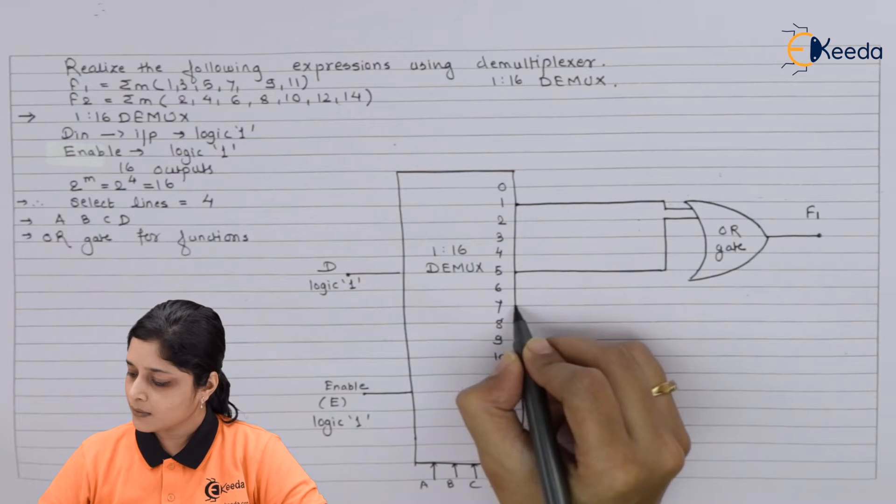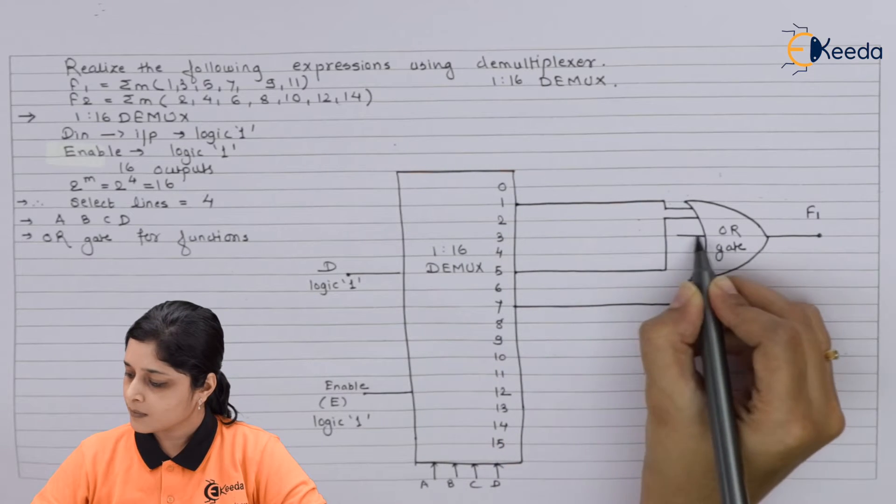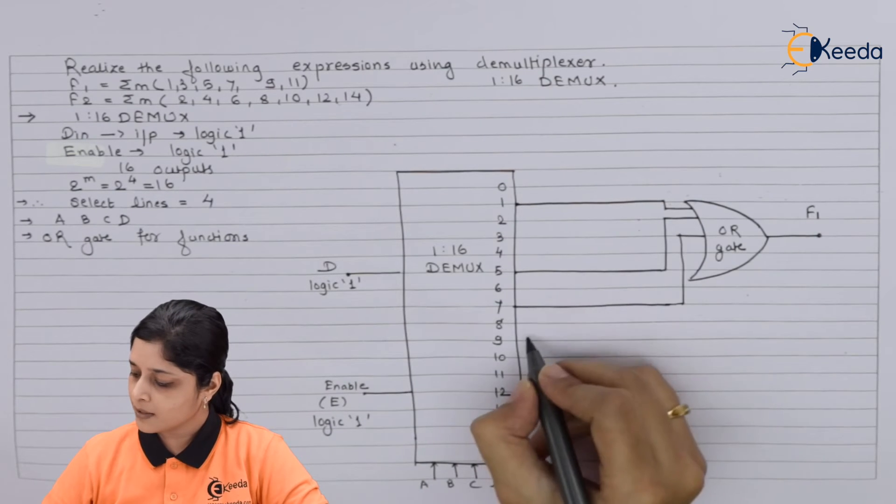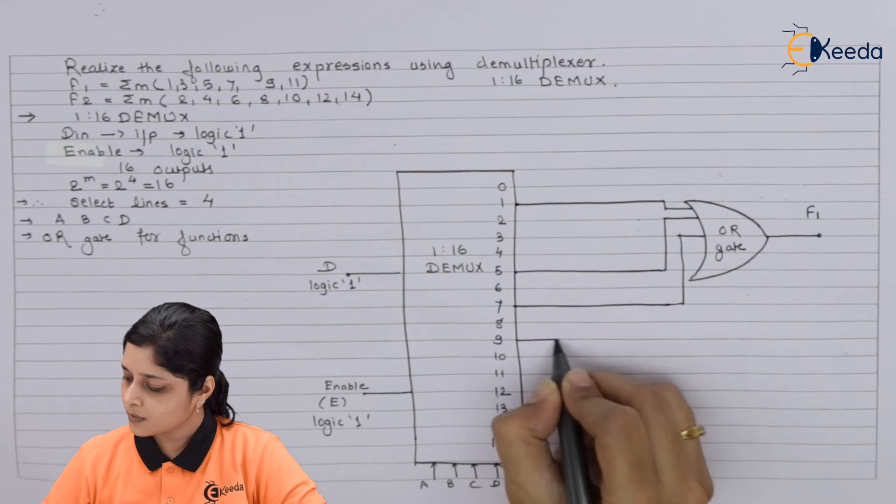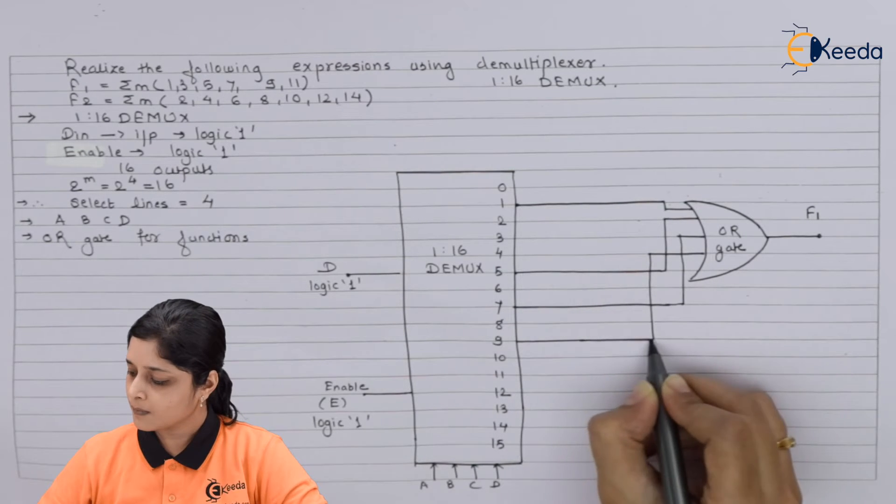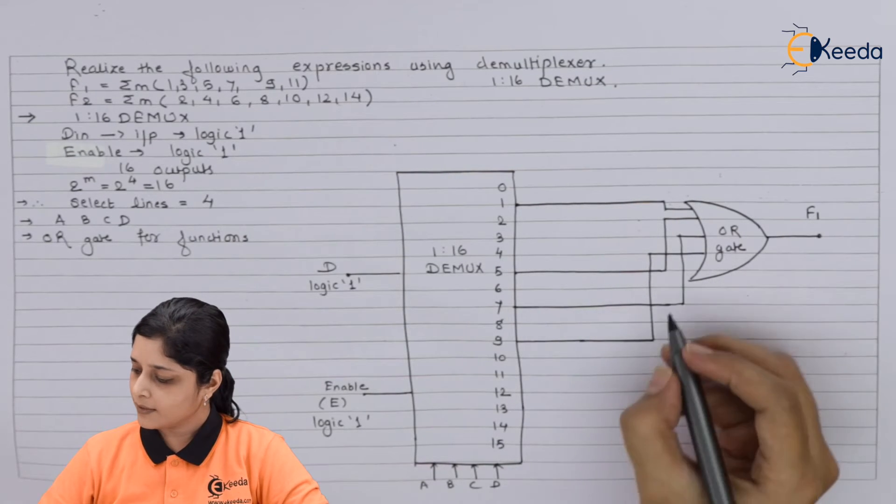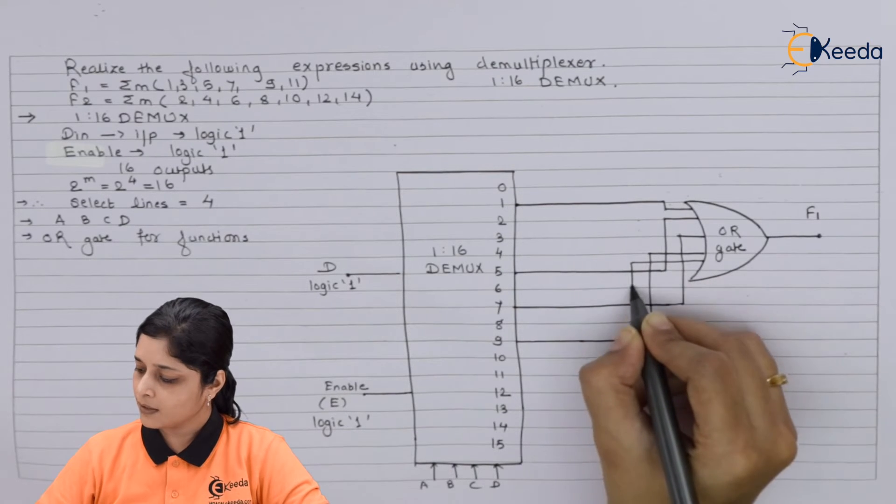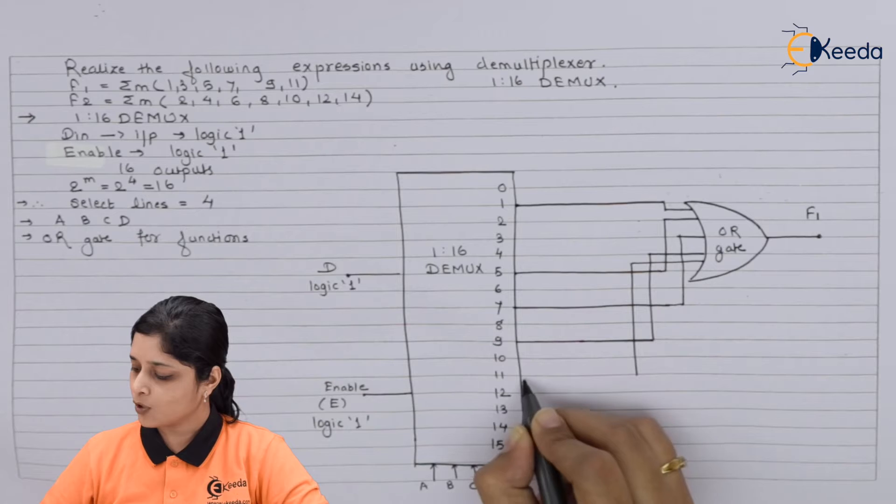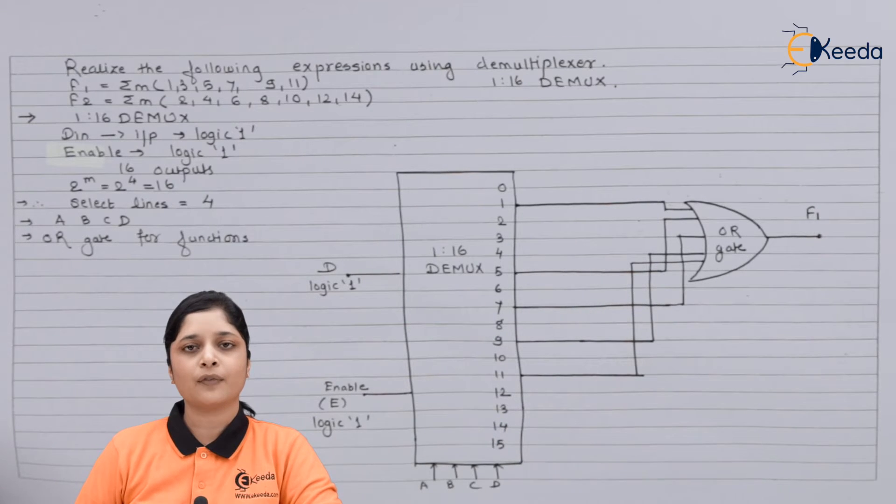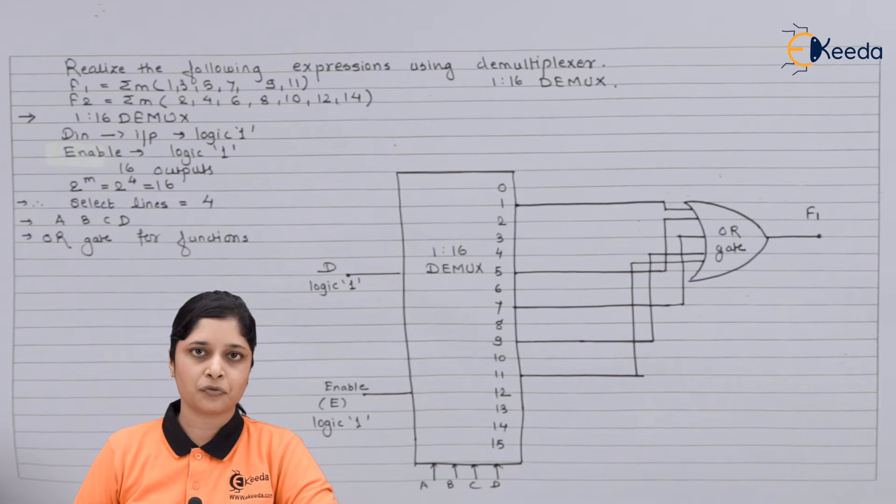Then 7, if you focus here. Then next term is 9, so we can take 9 as the outside term. Then 11, so we can take it as the outside term. In this way you have to draw the OR gate for first function.